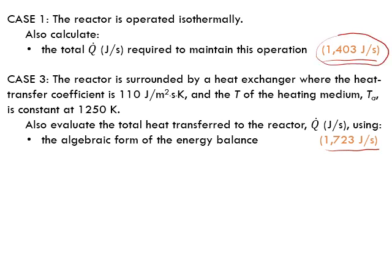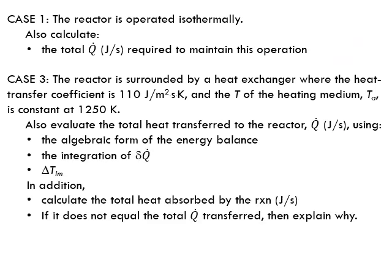In the isothermal case we provided the heat required for the reaction to proceed at constant temperature. But here we provided that same heat plus a little bit more — about 300 joule per second extra — and that little bit more of heat causes the temperature to increase. How else can we calculate Q-dot total?